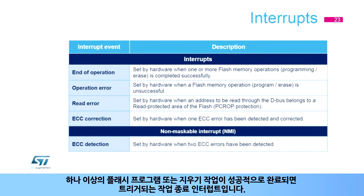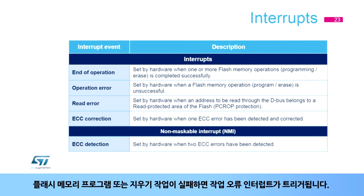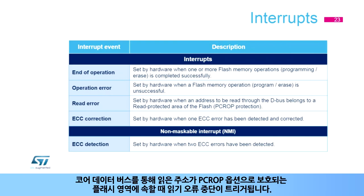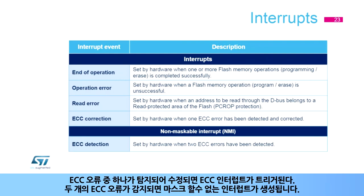Four interrupts can be generated by the flash memory. The end of operation interrupt is triggered when one or more flash program or erase operations complete successfully. The operation error interrupt is triggered when a flash memory program or erase operation fails. The read error interrupt is triggered when an address read through the core data bus belongs to an area protected by the PCROP option. The ECC interrupt is triggered when one ECC error is detected and corrected. When two ECC errors are detected, a non-maskable interrupt is generated.